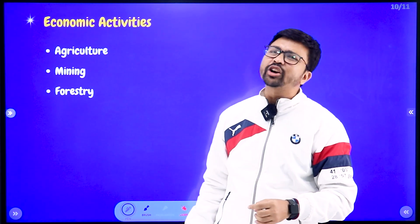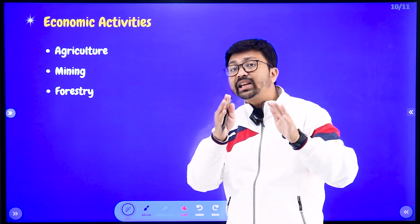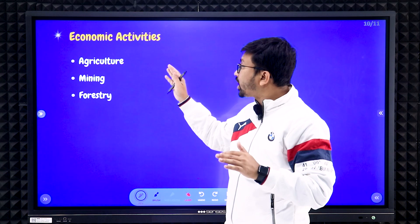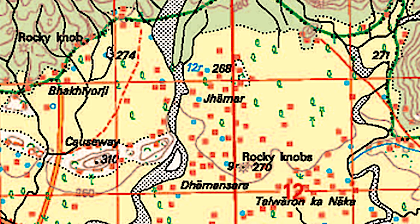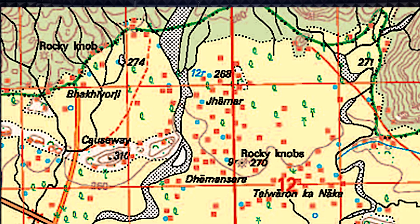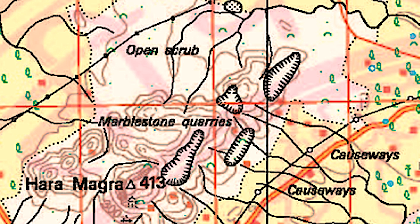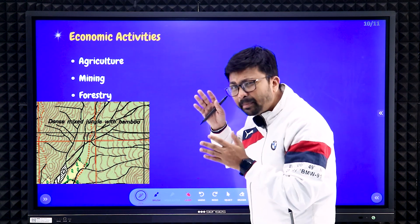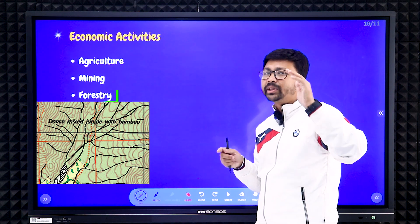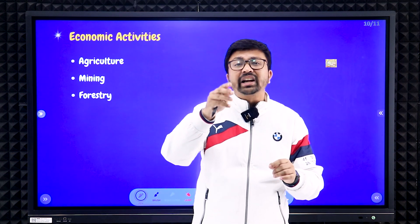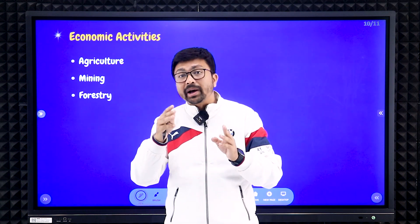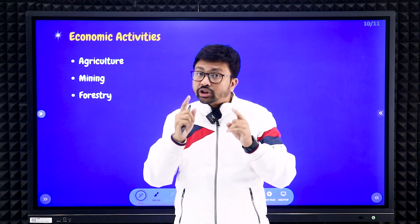Next, the main economic activity question — you need to predict the main economic activity after observing the topographical map. Yellow color patches indicate agricultural fields. If you see stone quarry or marble quarry written on the map, mining is the main economic activity. Green patches indicate forestry. Open scrub indicates animal rearing, and even a veterinary hospital on the map indicates animal rearing is an important economic activity.